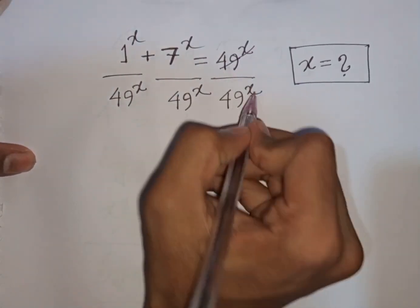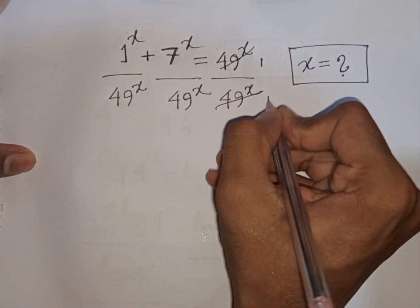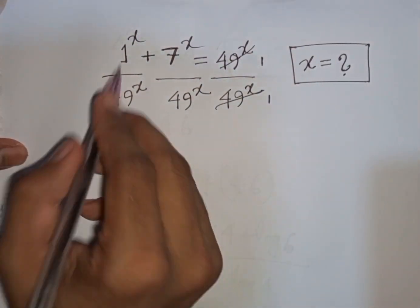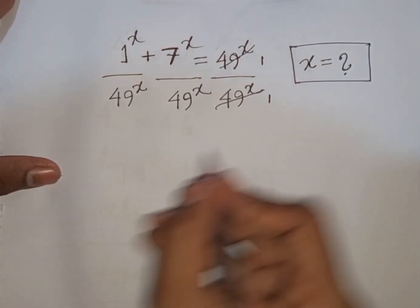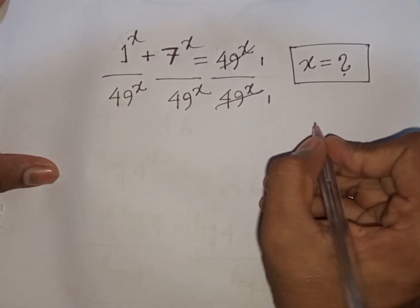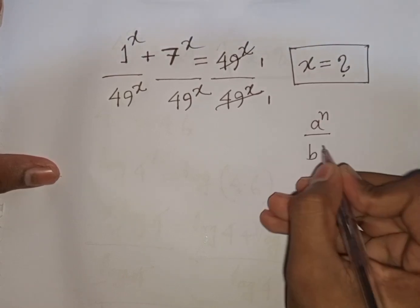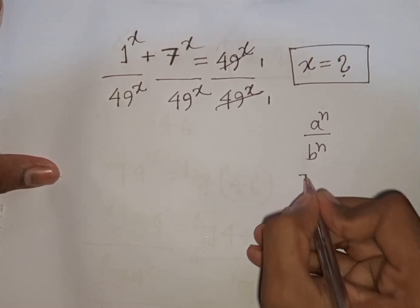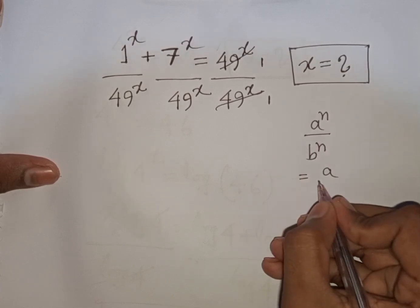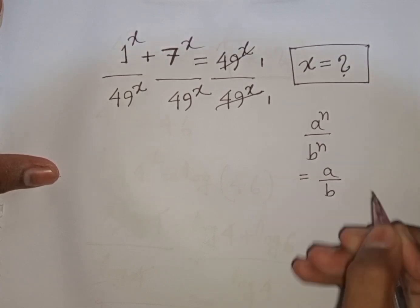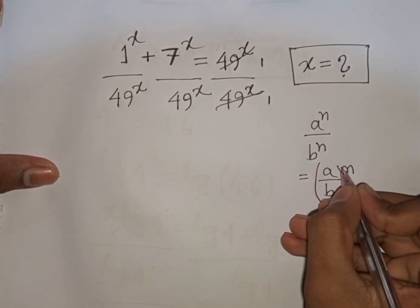Now this will be cancelled. From here, x, x — same power but different base. So remember this exponential rule: a^n over b^n is equal to (a/b)^n, bracket common power n.